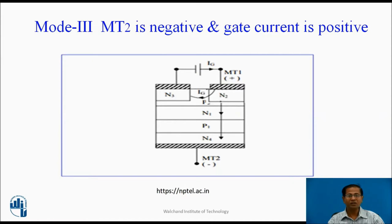Mode 3: MT2 is negative and gate current is positive. In this mode, P2-N1 is forward biased, P1-N4 is forward biased, and N1-P1 is reverse biased. The gate injects a large number of charge carriers, causing P1-N1 to become forward biased. The device conducts and current flows through P2, N1, P1, N4. In this mode, the Triac is less sensitive to positive gate current, so this mode is not recommended for operation.